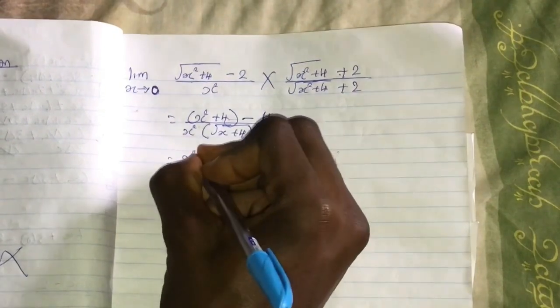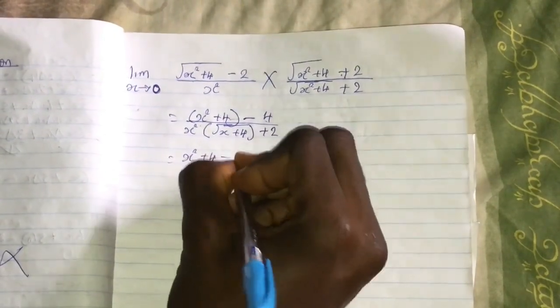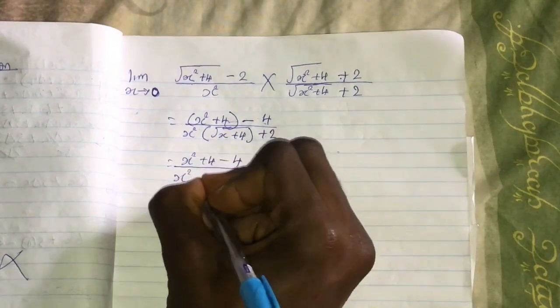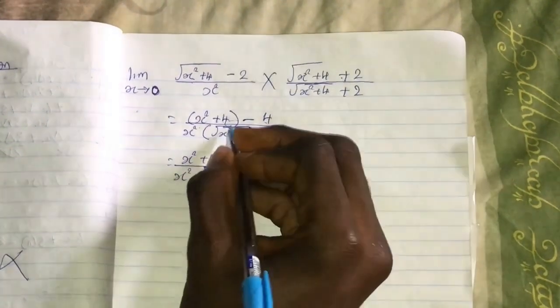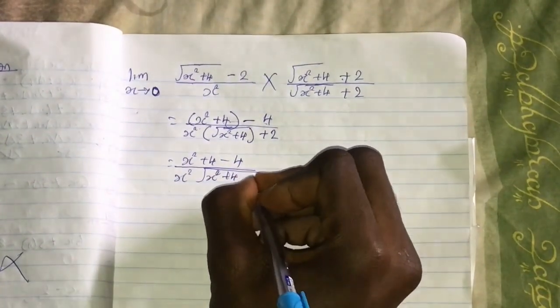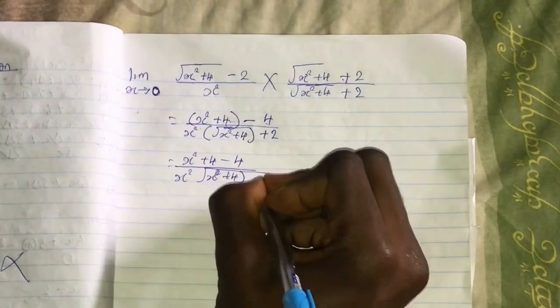You start back at this: all over x^2 in brackets sqrt(x^2 + 4) + 2. So if you open this, that would be x^2 + 4 - 4. Then I'm left with x^2, sqrt(x^2 + 4) close brackets, plus 2.